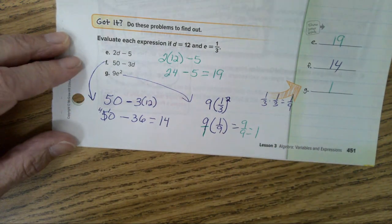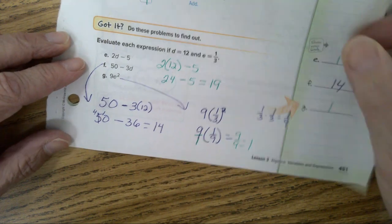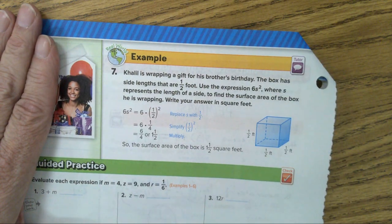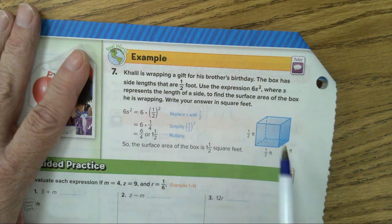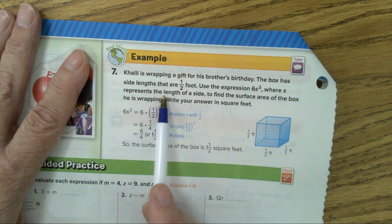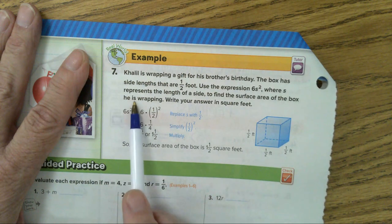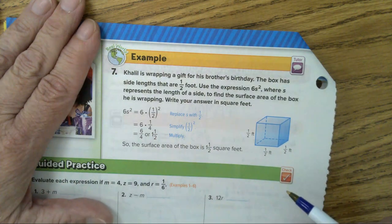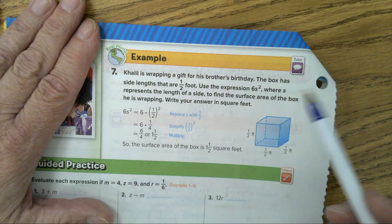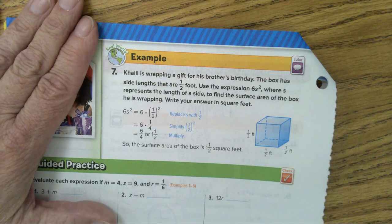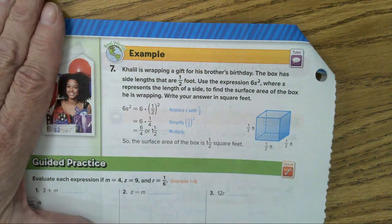Now, we're going to go to page 452. On page 452, example 7, it says, This person is wrapping a gift for his brother's birthday. The box has side lengths that are a half a foot. Use the expression 6 times S squared, where S represents the length of a side, to find the surface area of the box he is wrapping. Write your answer in square feet. Now, there are 6 sides to a cube. And, to find the area of a cube, you multiply 1 half times 1 half, and then take that times 6. We'll study this formula more after the winter break, when we are doing our geometry unit.